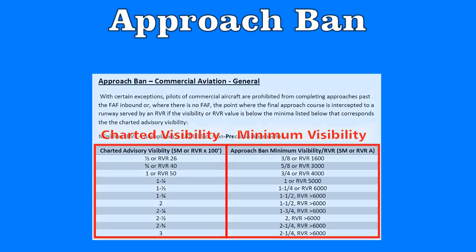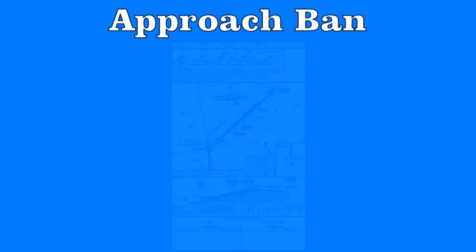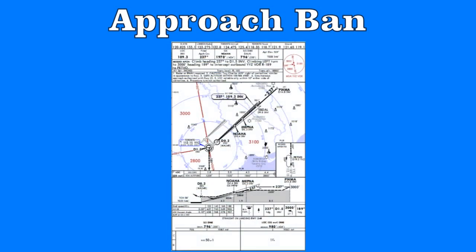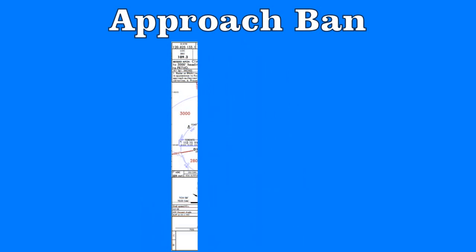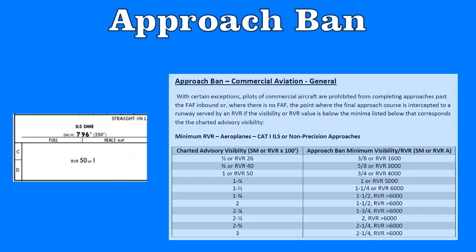How about a quick example? Here is the chart for the ILS to Runway 24R in Toronto Pearson. The advisory visibility found on this plate at the bottom is RVR 5000, or 1 statute mile. So we look at our approach ban table, and across from the 1 mile / RVR 5000 on the left column, we see the approach ban kicks in at three-quarters of a mile visibility, or RVR 4000. If the visibility or RVR is below this value, you cannot fly this approach past the final approach fix. Note how for most values on this chart, the required visibility is approximately 75% of the advisory visibility.